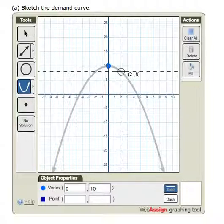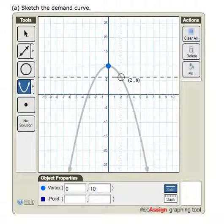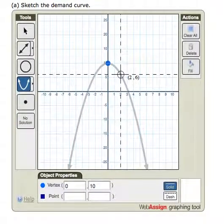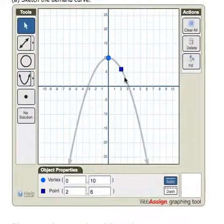And then let's locate another point. To do that, you have to plug in an x value. So I'm going to plug in, say, 2. 2 squared is 4, and so that would be negative 4 plus 10. That would be 6. So I need to go to (2, 6) and click the second point.